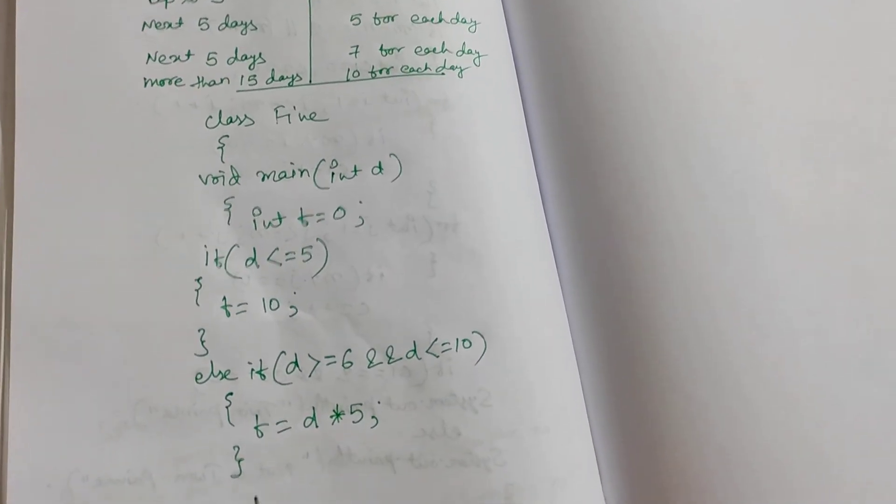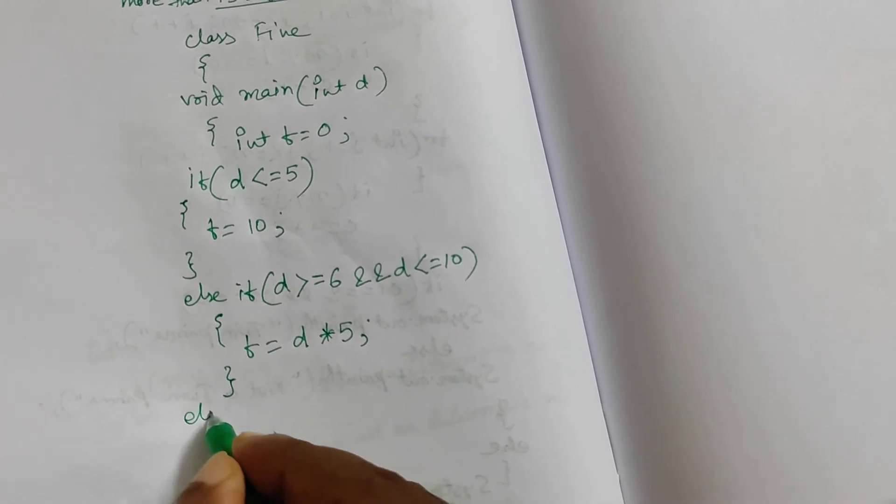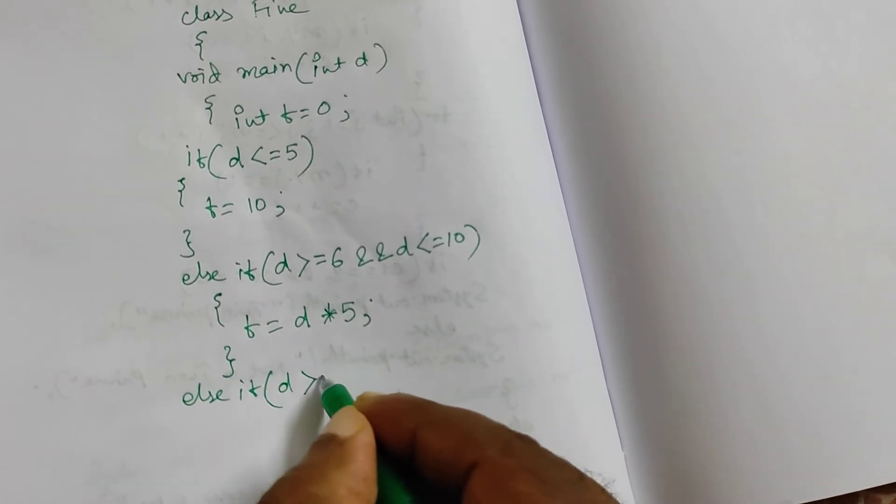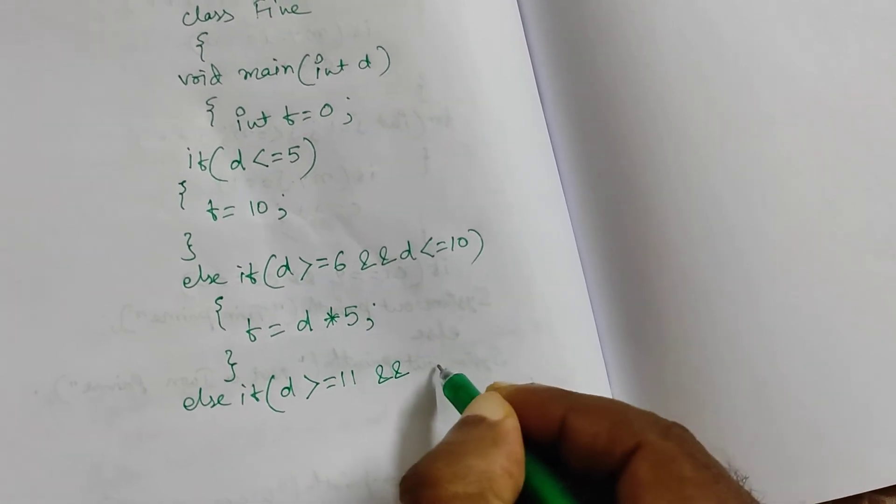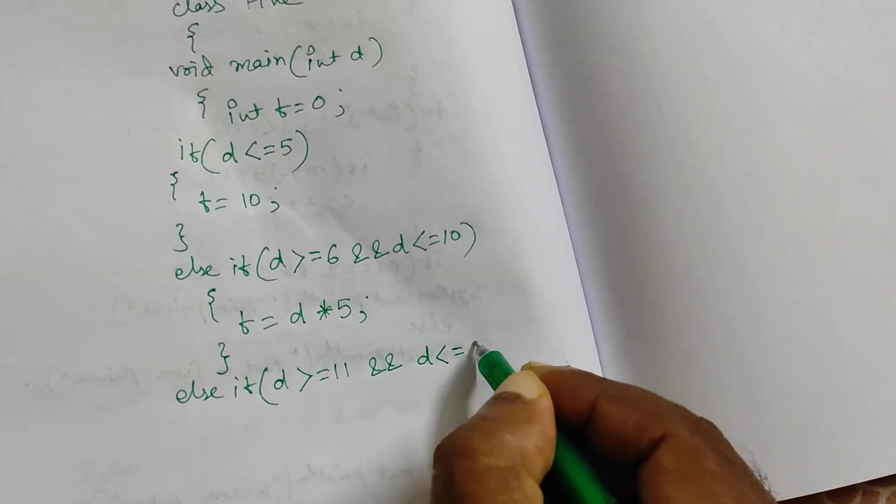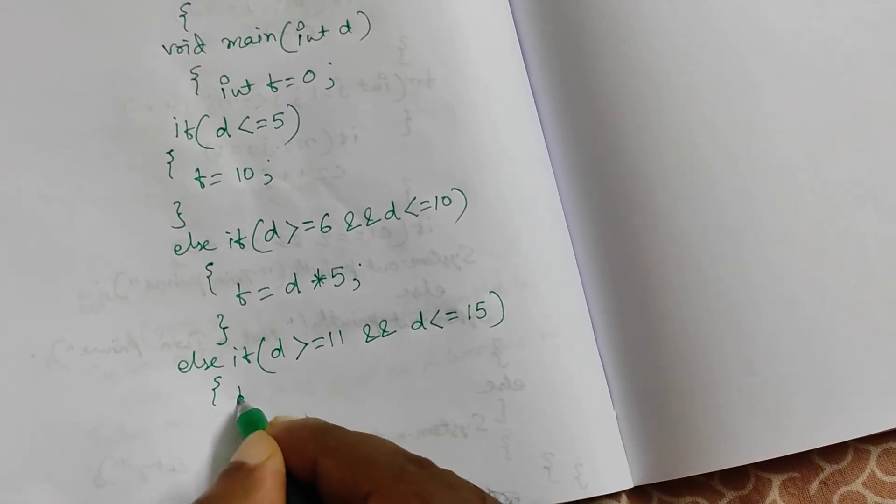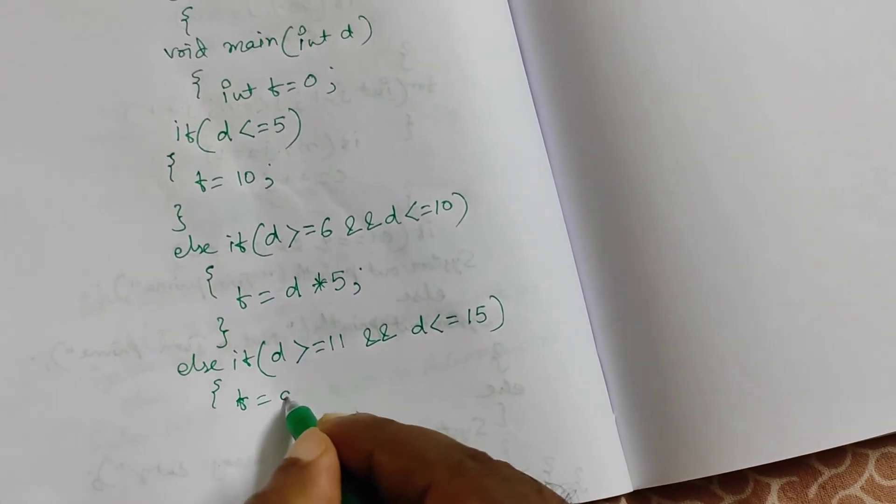Again next 5 day, if it is given, as if d greater than equal to 11, and d less than equal to 15. So you have to pay fine, 7 rupees per day.